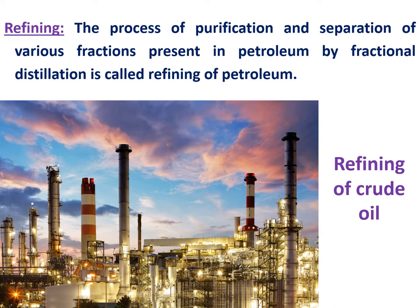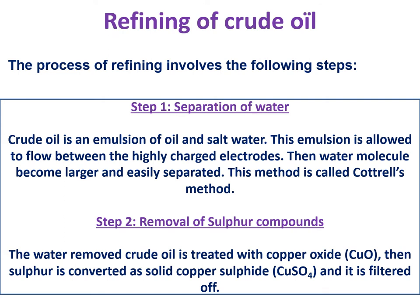First, let us look at purification. The first step is separation of water. Salt water is mixed with crude oil and they form emulsions. At the high temperature and high pressure conditions where crude oil is found, water is completely miscible in the crude oil — they mix together completely. You are unable to identify two separate layers: an oil layer and a water layer. They are completely soluble in each other, forming emulsions, and cannot be removed by simple filtration or a separating process.